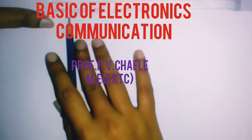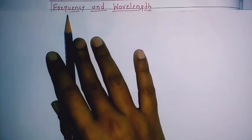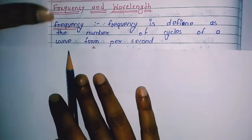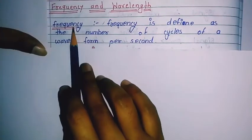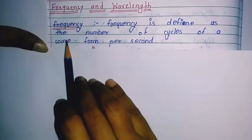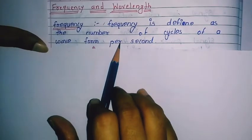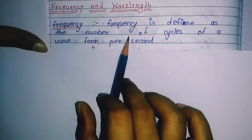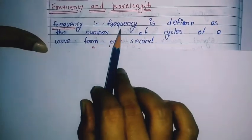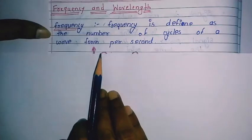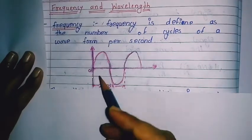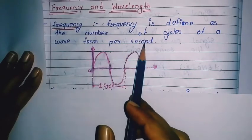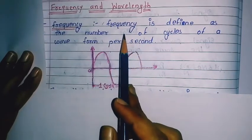The definition of frequency and wavelength. The first definition is frequency. Frequency is defined as the number of cycles of waveforms per second. When the number of cycles are complete per second, we call it frequency. Here we have also shown the waveforms. If one cycle is complete per second, then it will be a frequency.